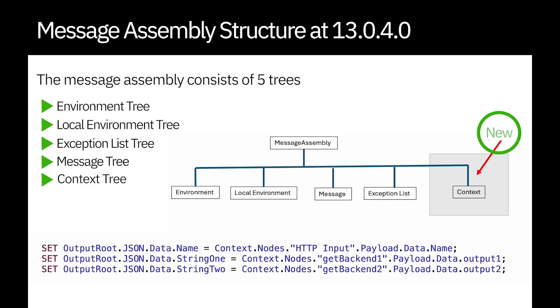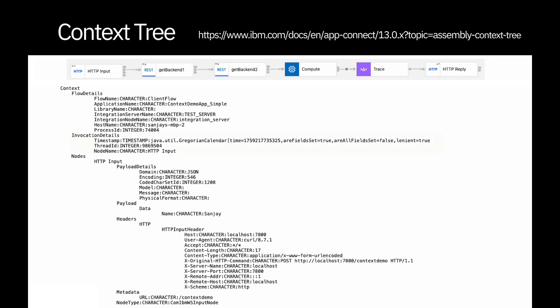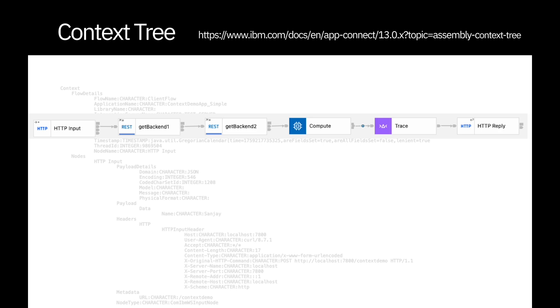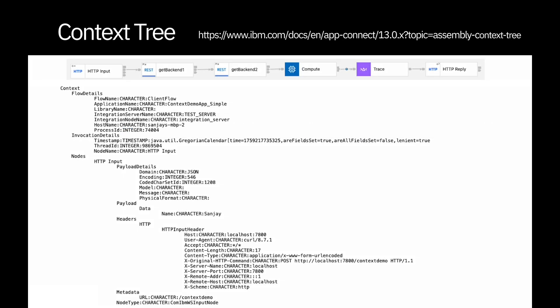The context tree has information about how the message flow was invoked, and context information from every message flow node earlier in the flow, including payload details. I have a breakpoint after the compute node and when I stop there, I can see the context tree in the debugger showing details of every earlier node. In the past, you may have used the environment tree, the global cache, or an ESQL shared variable to access data from earlier nodes. By using the context tree, you no longer need to use these other methods.